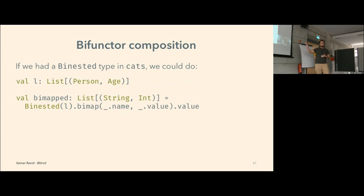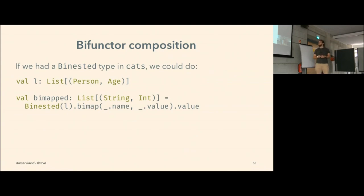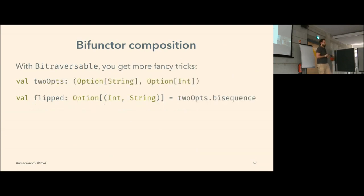With bitraversable, we could do even more fancy tricks — like taking a tuple of two options and flipping the layers, getting back an option of a tuple using the `bisequence` operation.